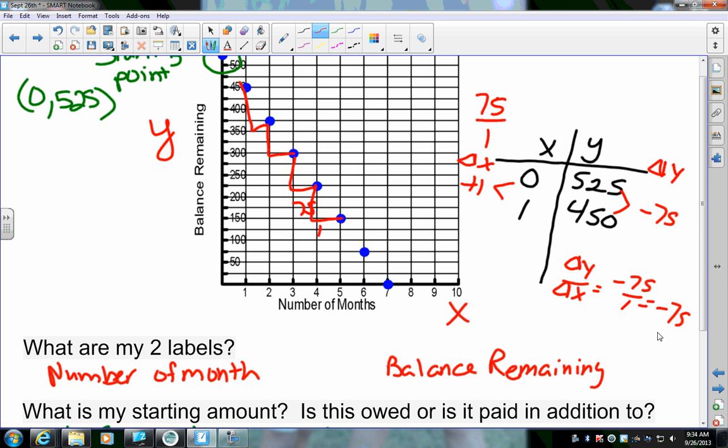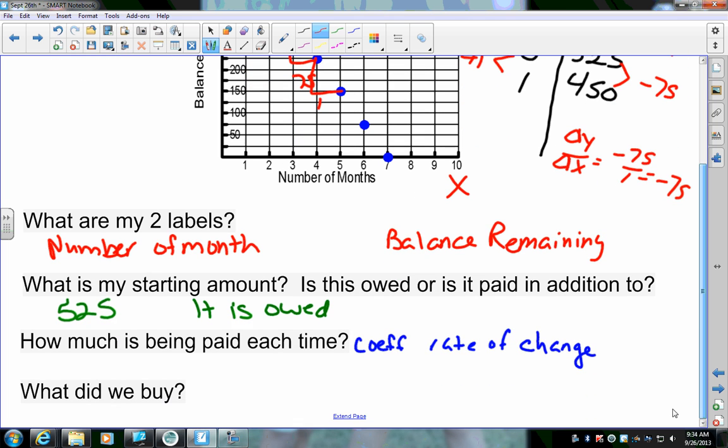It's negative. Well, let me ask you this. Why is it negative? The balance is going down. That's why it's negative. So, we should have this up here being negative on the 75. So, my rate of change is negative 75.